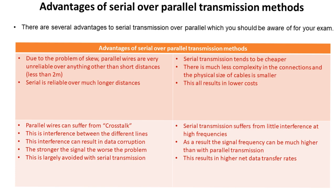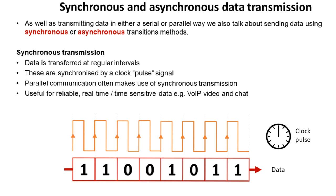Serial transmission suffers from little interference at high frequencies. As a result, the signal frequency can be much higher than with parallel transmission, and the net data transfer rates are higher. Along with the concept of serial and parallel transmission, we can also talk about data being sent using synchronous or asynchronous transmission methods.